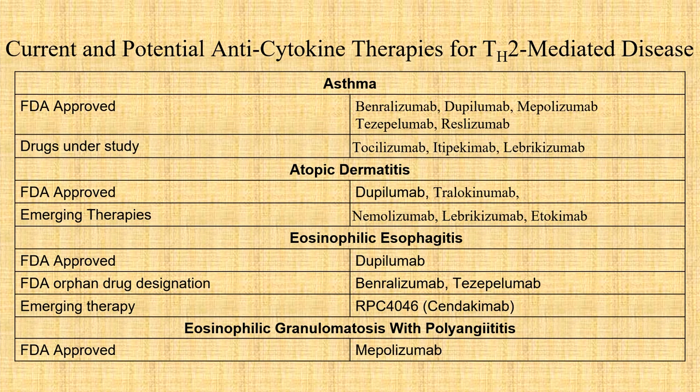Now we have current and potential anti-cytokine therapies for Th2-mediated disease, divided by disease type. For asthma, FDA-approved agents include benralizumab, dupilumab, mepolizumab, tezepelumab, and reslizumab. Drugs under study include tocilizumab, itepikimab, and others. For atopic dermatitis, we've heard a lot about these medicines already, and there are some emerging therapies including nemalizumab, labrikizumab, and tralokinumab.